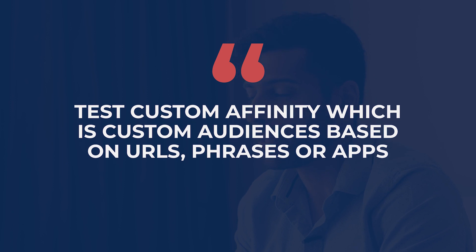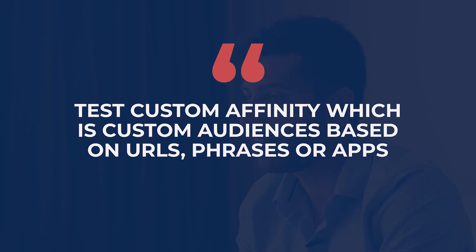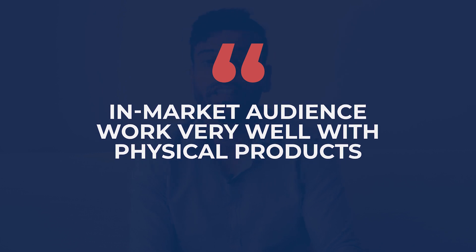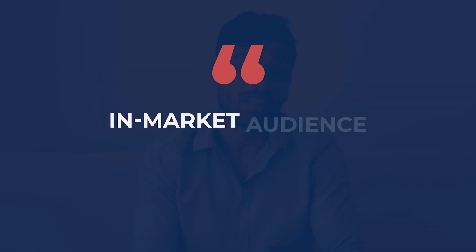I also recommend testing custom affinity audiences, which is a custom audience based on URLs, phrases, or apps — you can target the brand name of whatever product you're promoting. Another great audience type is in-market audiences, which are lists of people Google thinks are interested in certain products or niches — things like furniture or people looking for new jobs. Find an in-market audience correlated to whatever you're selling. We've had great results with in-market audiences, especially for selling physical products.